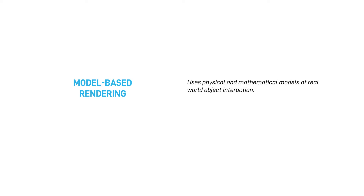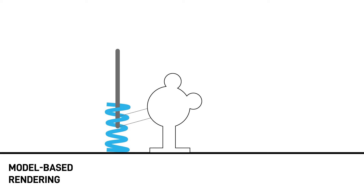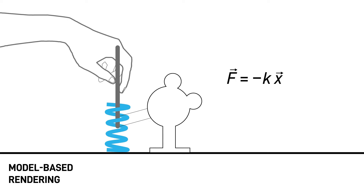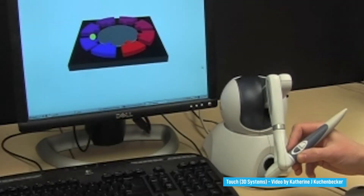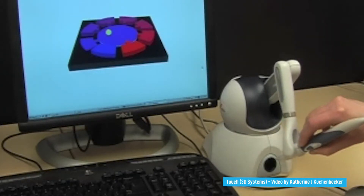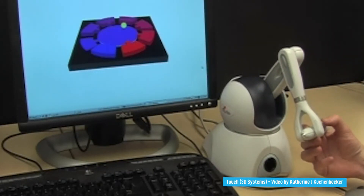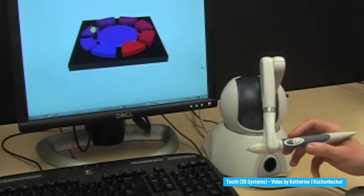The model-based approach has the longest history and has been used for decades. In this approach, hapticians use physical and mathematical models of real-world interactions with objects to simulate the haptic sensations. For example, the mathematical model of a spring is widely used in haptics. The formula shows a force of a spring, F, that is proportional to X, the change in its displacement. A stiffer spring with a large K, or stiffness measurement, provides a larger force for the same displacement compared to a less stiff spring. Springs are especially valuable to render contact with walls and solid objects in a virtual environment. Pressing on a virtual wall is similar to pressing against a spring with an infinite stiffness.